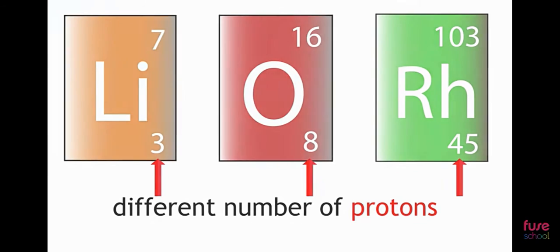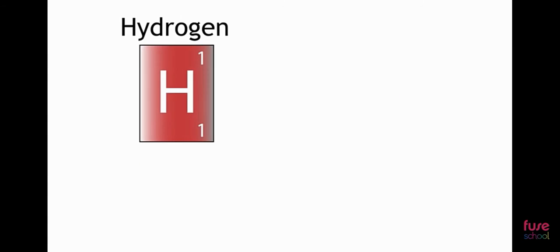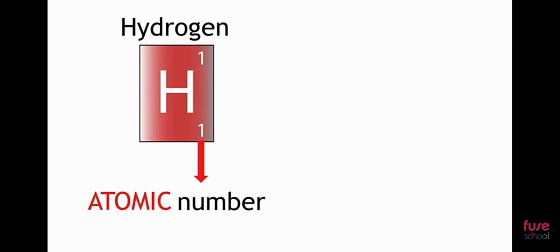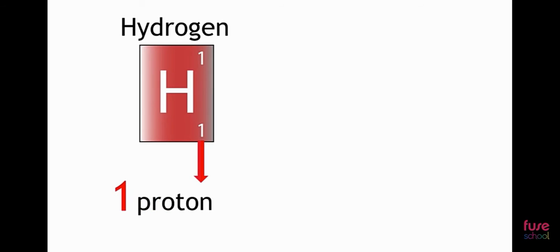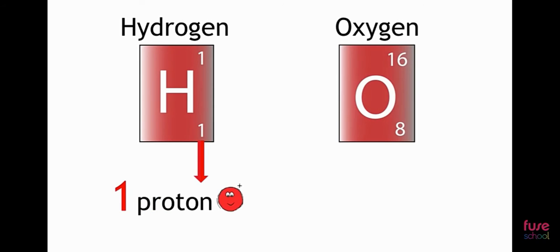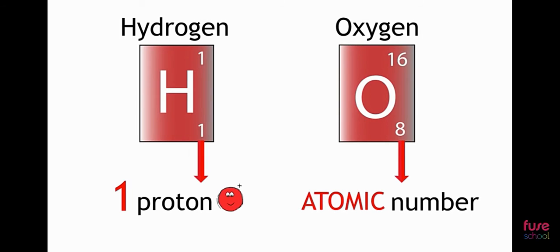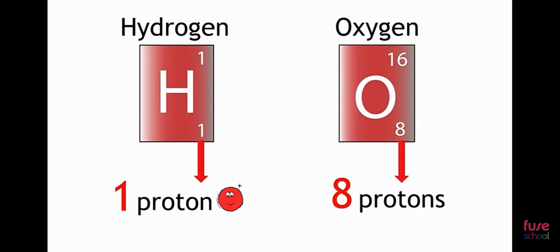For example, an atom of hydrogen has an atomic number of 1 because it has 1 proton. But an atom of oxygen has an atomic number of 8 because it has 8 protons.